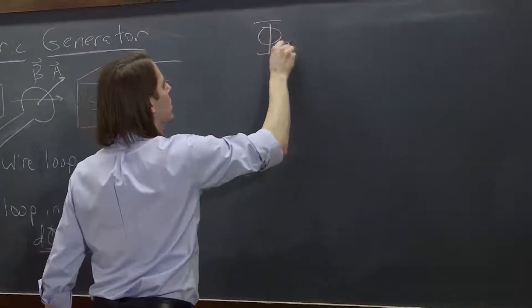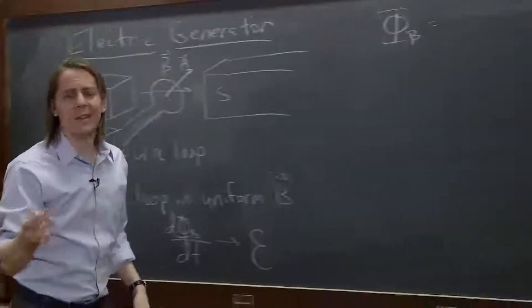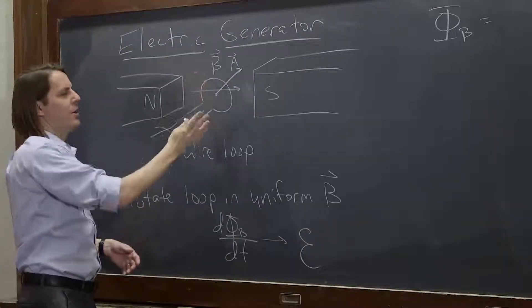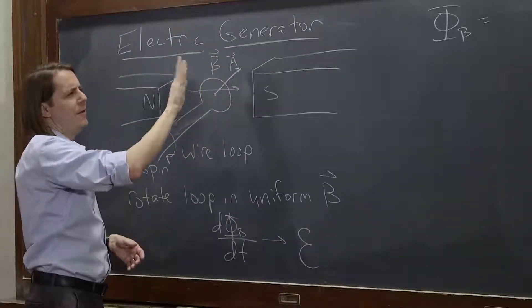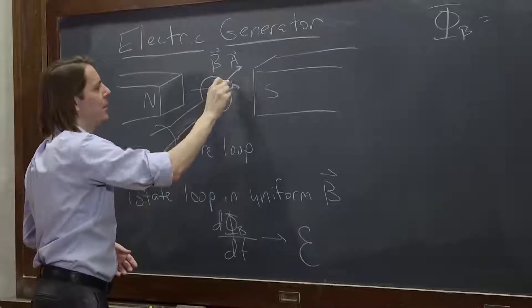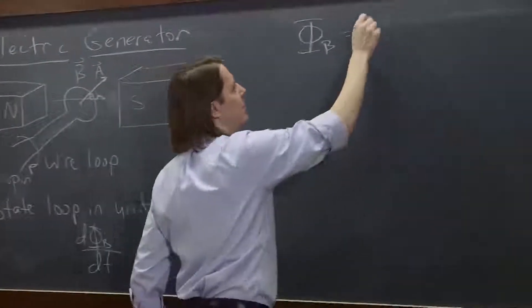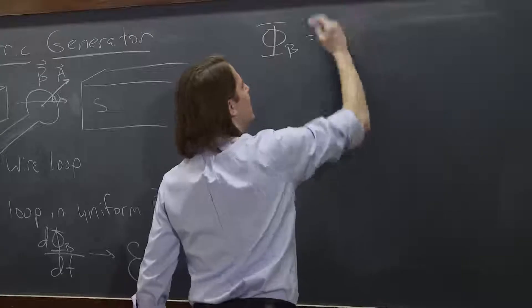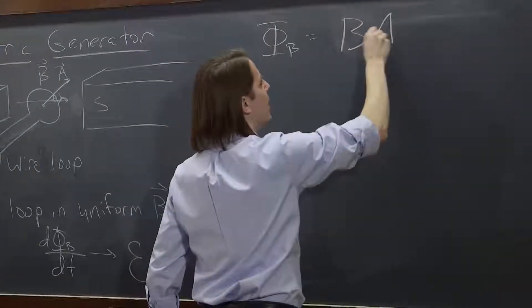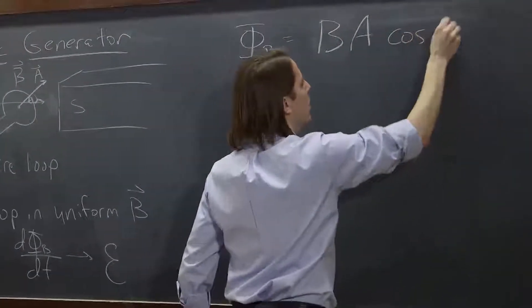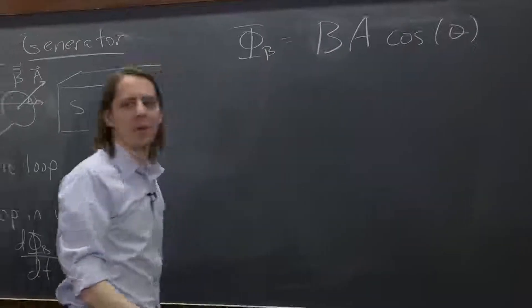So we know, in this case, if the B field is uniform, and there's the A vector, that the magnetic flux through the loop would depend on that angle theta. We know it would basically be B, the magnetic field B, if it were uniform, times the area of the loop, times cosine of that angle.